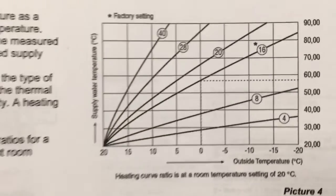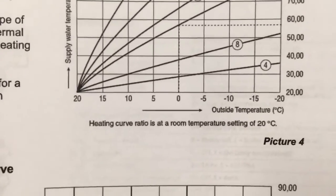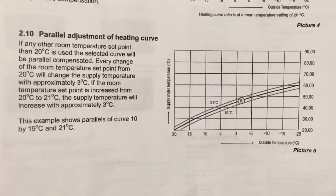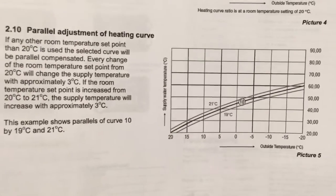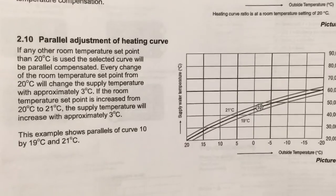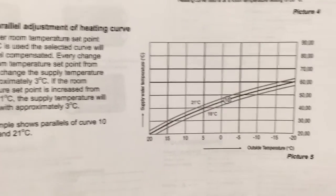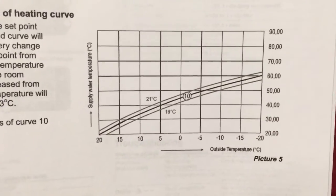This says it's basically the heating curve ratio is at room temperature setting at 20 degrees, which we've got the thermostat set to. But what it mentions down the bottom is parallel adjustment of the heating curve. So for every degree you go up and down, it changes the supply temperature approximately three degrees Celsius.